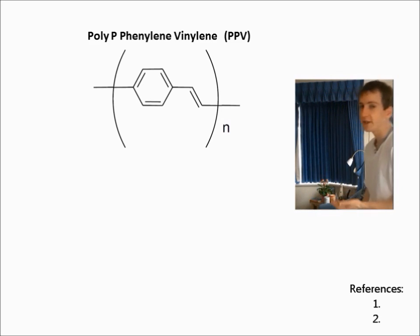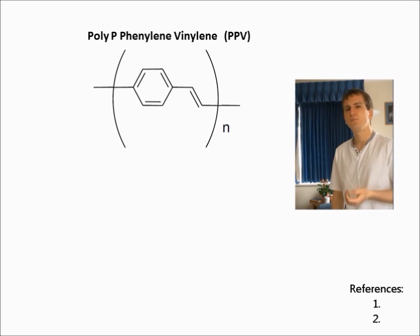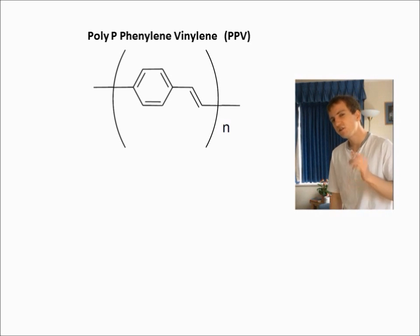Well, the first polymer used in a P-OLED was PPV, and the repeat unit is shown here. If you were to Google PPV, you'd learn that it's conjugated. In fact, you'd find that all the polymers used in P-OLEDs are conjugated.